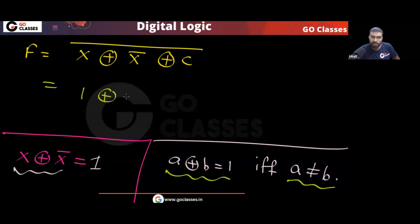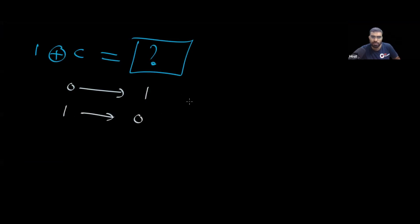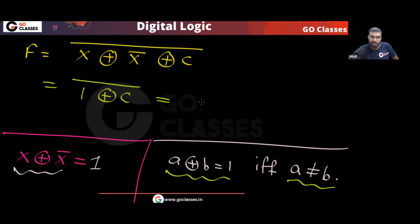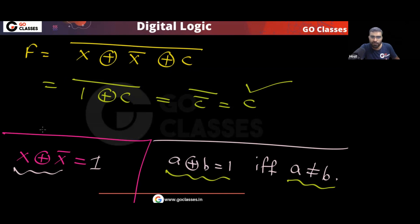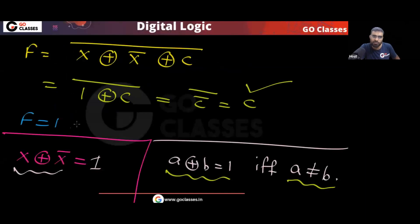So what I can say: it will be (1 XOR C), whole complement. Now, if C is zero, the final result inside is one; if C is one, the final result inside is zero. So whatever C is, we are writing its complement — this will be C bar. So F = (C̄)̄ = C. Your F is equal to C.